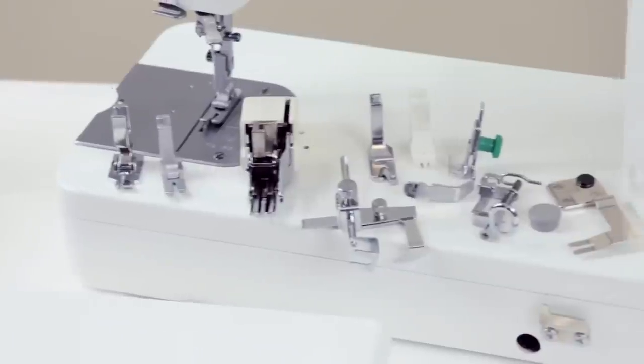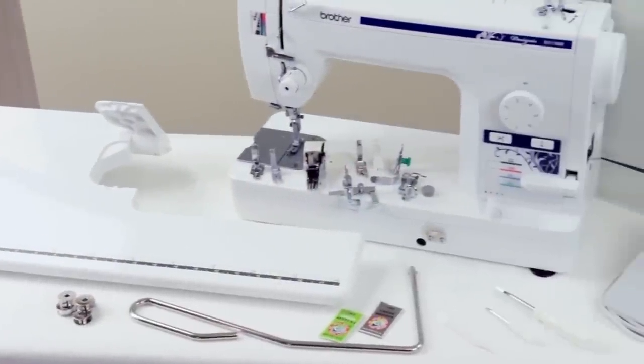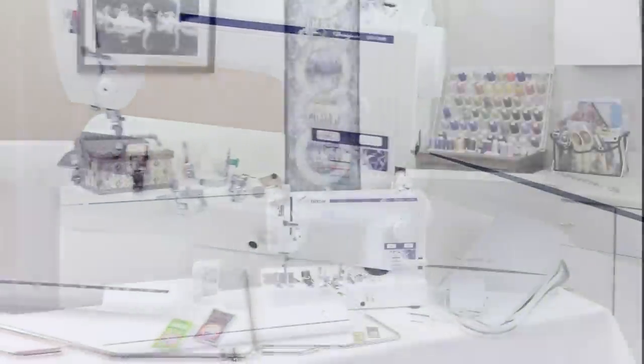The DZ1500F includes a fabric separator, extra-large extension table, six sewing feet, metal bobbins, knee lifter, needle set, foot controller, and a protective case.